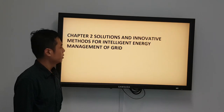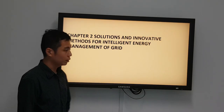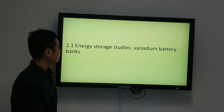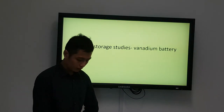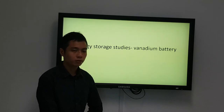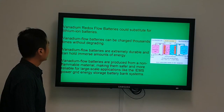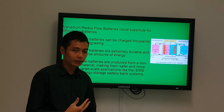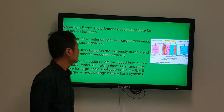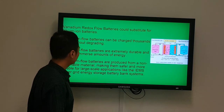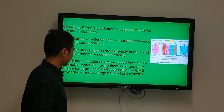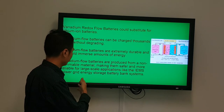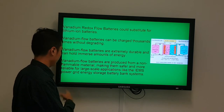For Chapter 2, we look at solutions on how to implement intelligent energy management of grids. We study the battery banks implemented and why we want to use them. Vanadium flow battery banks can be used to replace lithium-ion batteries because they can be charged many times, are extremely durable, produce non-flammable material, and are suitable for large-scale applications such as a power grid.